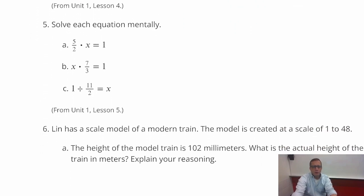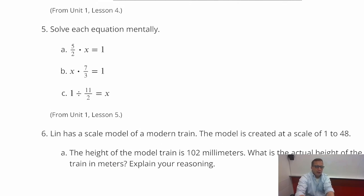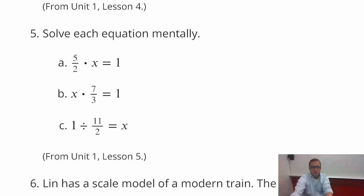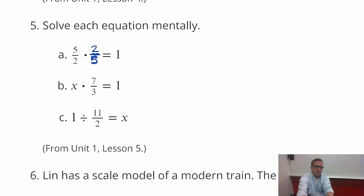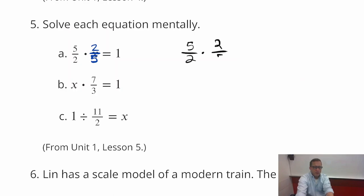Number five, solve each equation mentally. So five-halves times what is one. Now, if you can't do this mentally, which I can totally understand why that can't happen. One thing you might realize is that when you multiply a number by its reciprocal, when you flip it two-fifths, you end up getting one. You get a product of one every time. So because if you think about it, if I do this off to the side here, five-halves times two-fifths, if I don't do any cross-cancelling, I get ten-tenths. And then anything over itself is equal to one. One-ones, which equals one. So as long as you multiply by the reciprocal, you're going to get one.